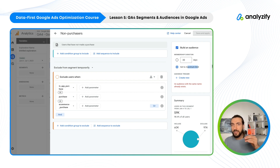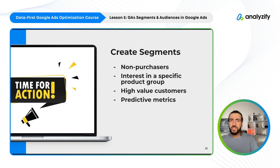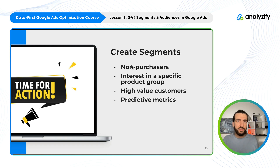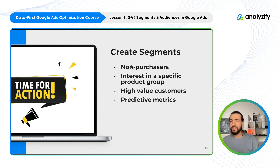So when we create this non-purchasers segment and also choose Build an Audience and set it to maximum limit, the segment I will use in reporting and the audience I will use in advertisement. In Google Ads I can choose this audience, give specific bids, and run remarketing ads. For example, with non-purchasers we can check the landing page report — which landing pages do non-purchasers visit versus purchasers? We can understand which pages lead to more purchases and decide to run more ads on those pages.